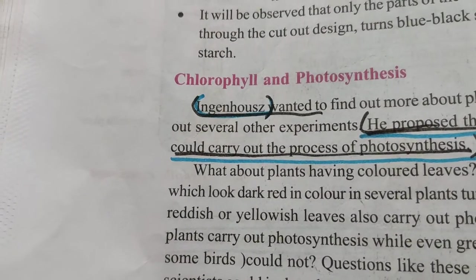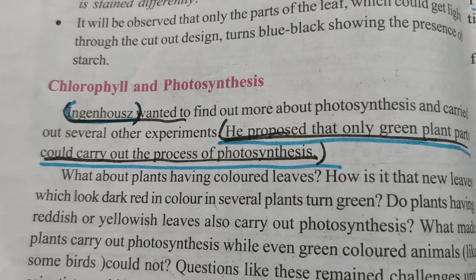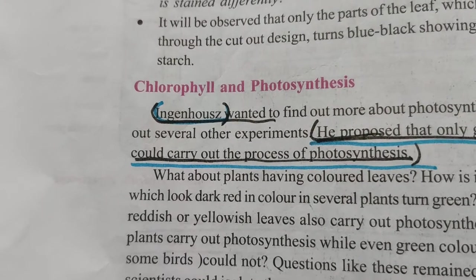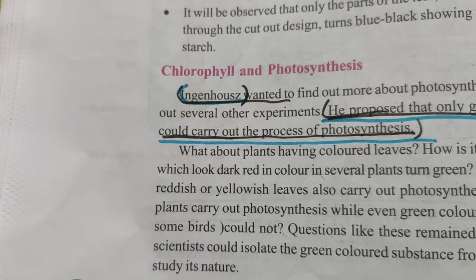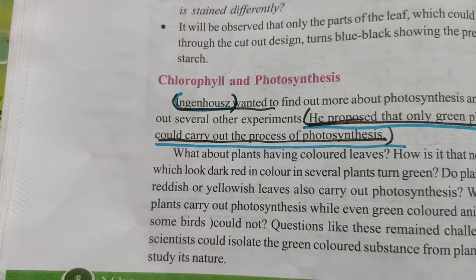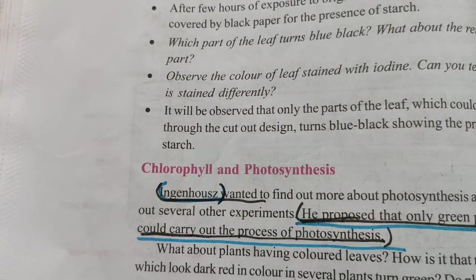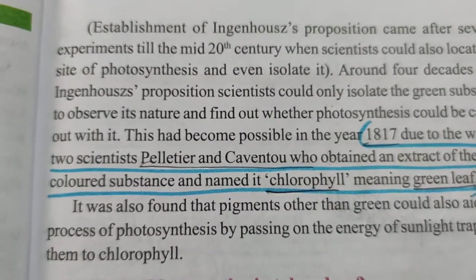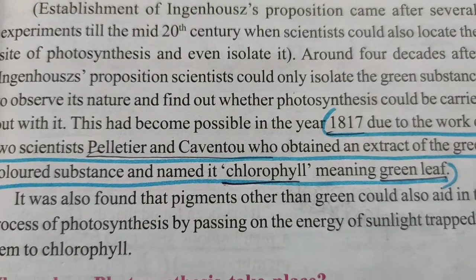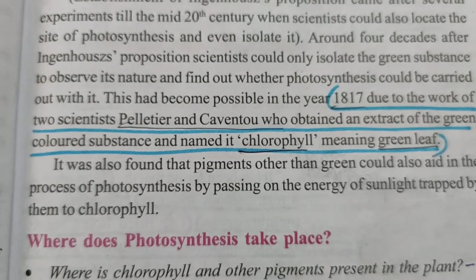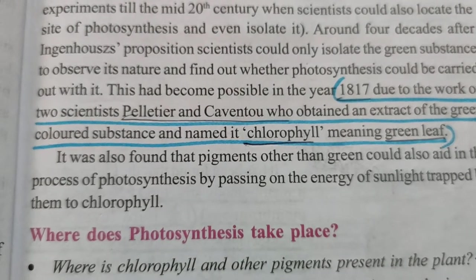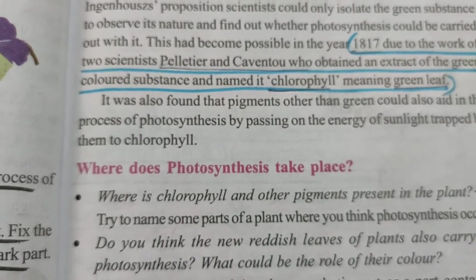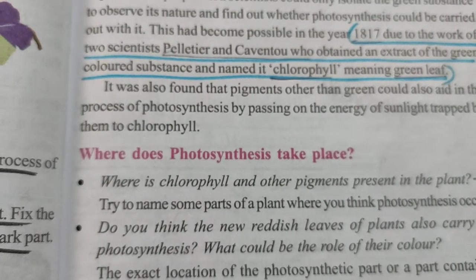The importance of chlorophyll: Jan Ingenhousz proposed that only the green parts of a plant could carry out photosynthesis — not the whole plant, only the leaf part. In 1817, two scientists, Pelletier and Caventou, obtained an extract of the green color substance and called it chlorophyll, meaning 'green leaf.' With this discovery, it was understood that only the green part of the plant — chlorophyll — is able to prepare food.